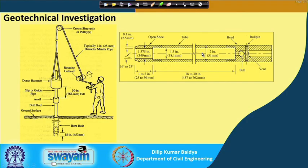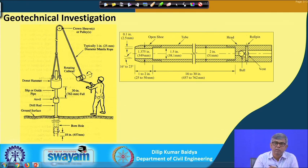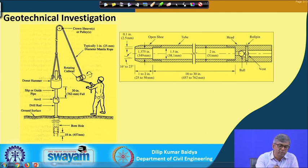As already described, for the SPT test a borehole is first made, and at the particular depth where the SPT test is required, the sampler is lowered. If the depth is too great, the sampler is connected by drill rods, and an anvil is placed at the top where the weight will fall. The weight is supposed to fall from 750 millimeters — which is the metric conversion of 30 inches.